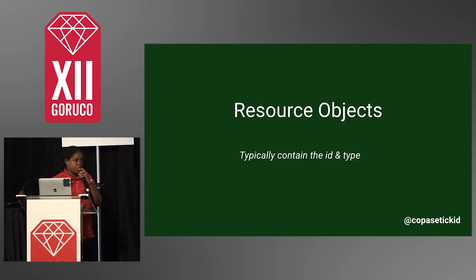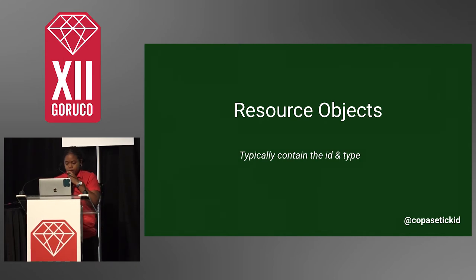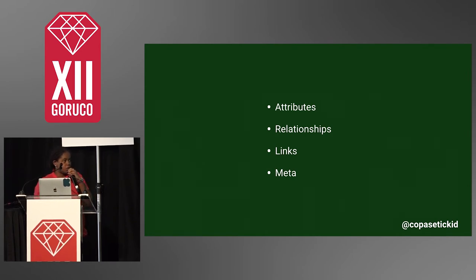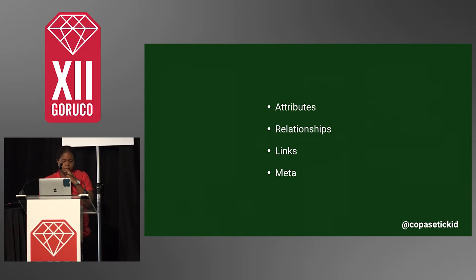Resource objects typically have the ID and type, like in that example where I used an article with just a number ID. They typically contain attributes representing each field — like columns in your table — relationships for any relational data that can come back, links for that related resource, and metadata, which is usually non-standard data you want to send along denoting anything important about that request.